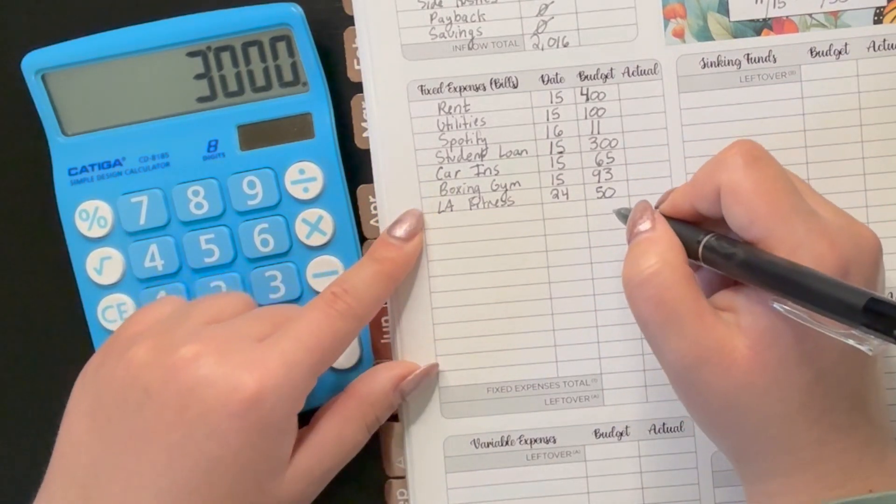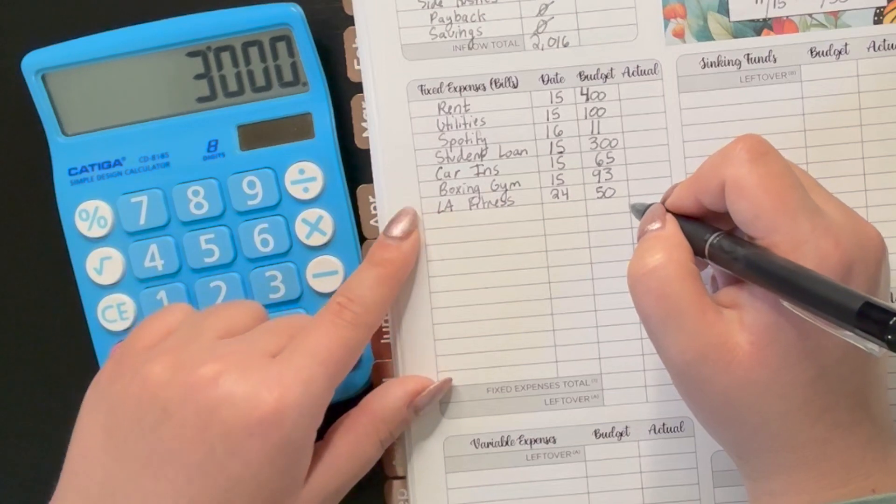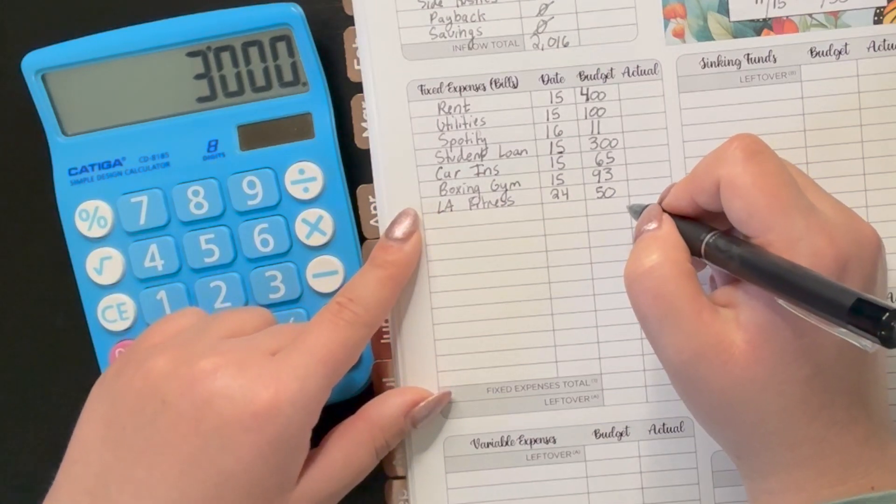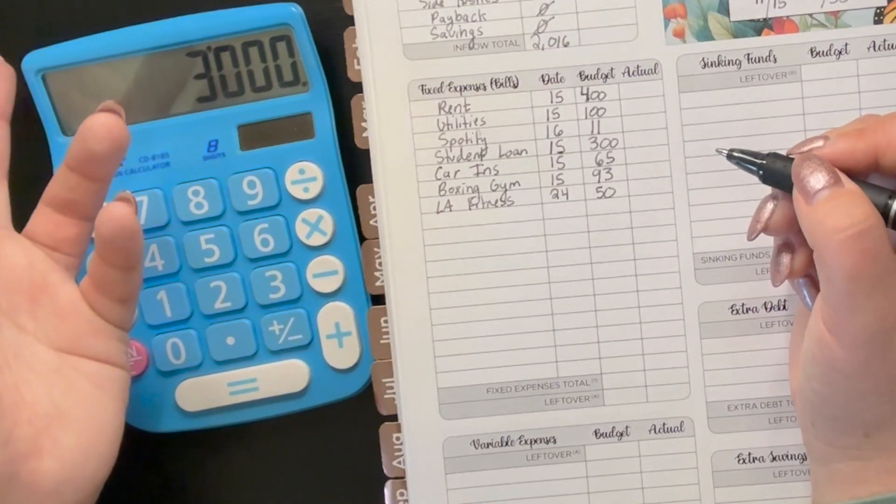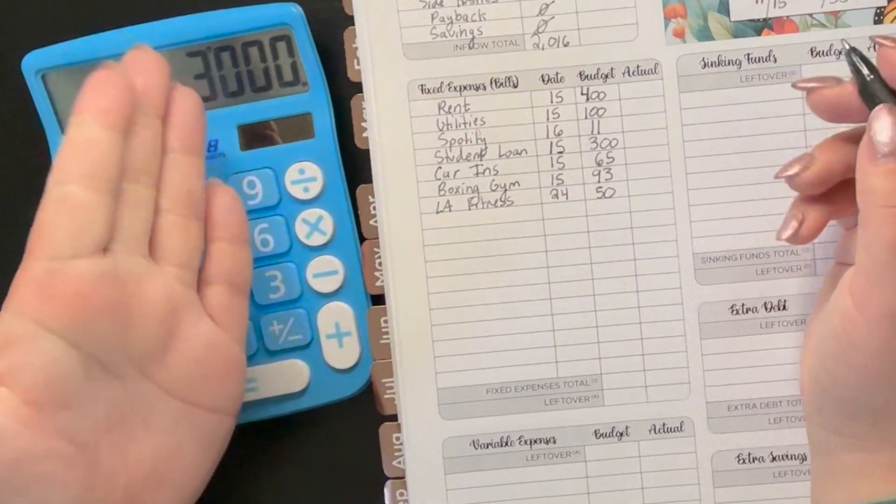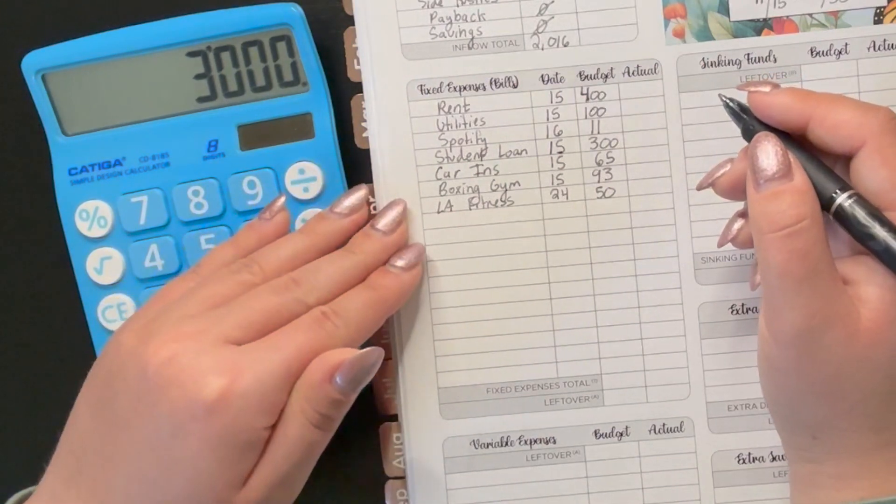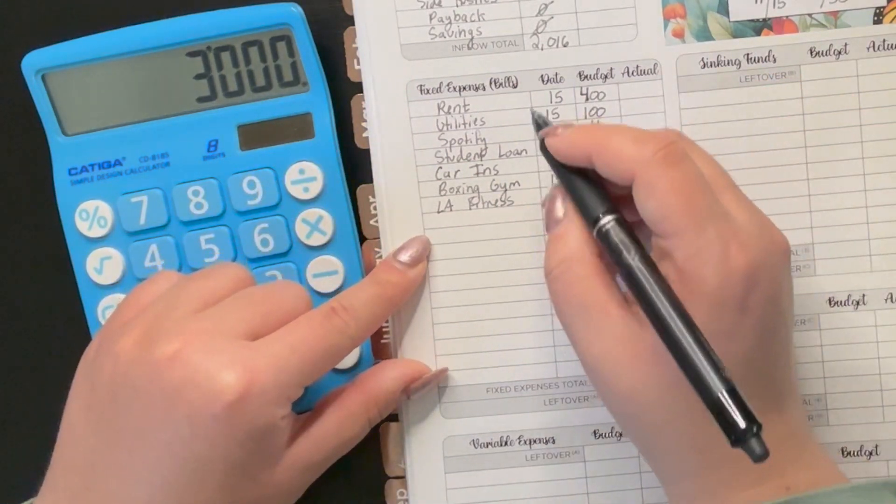You notice how I didn't write peacock down here as a streaming service. I actually canceled my peacock service because I wasn't using it. Like why am I paying $6 every month? Some of my shows go on there, but because of the writer's strike, they haven't been there. So I'm just going to wait until my shows are back on there and then I'll start the subscription and save the $6 until then.